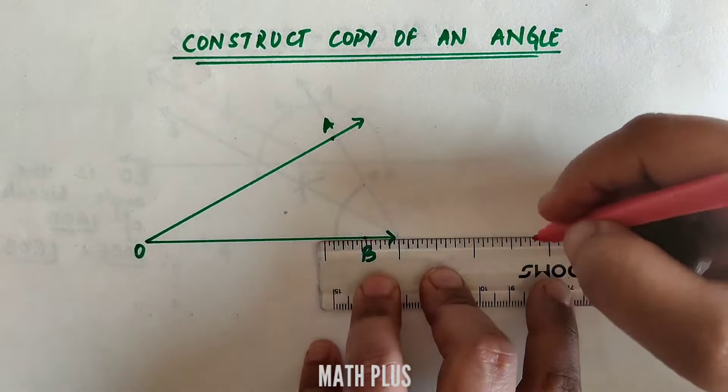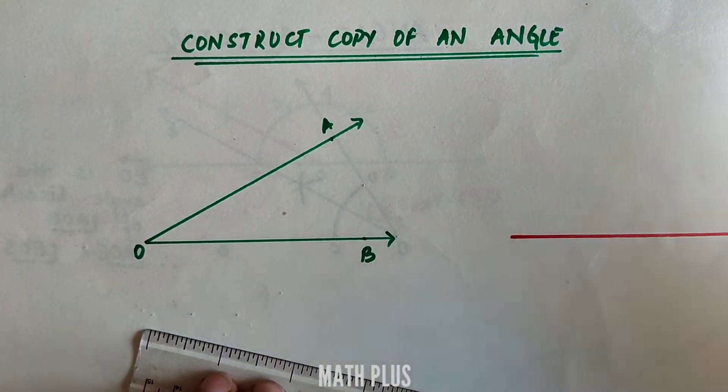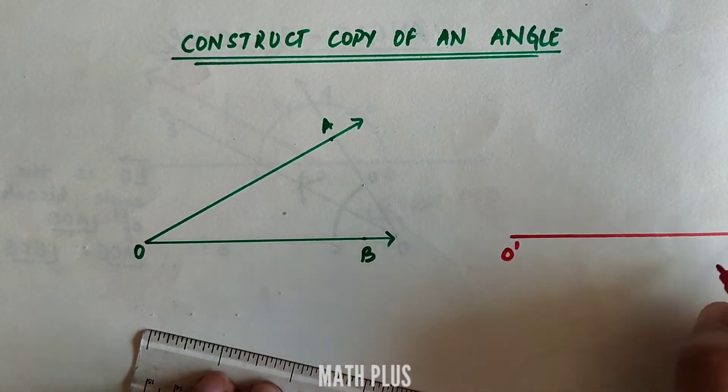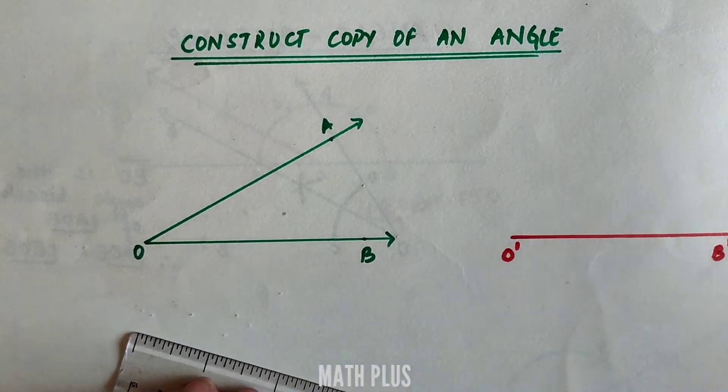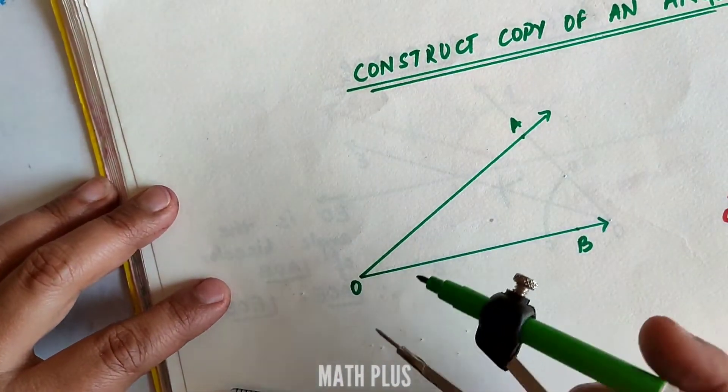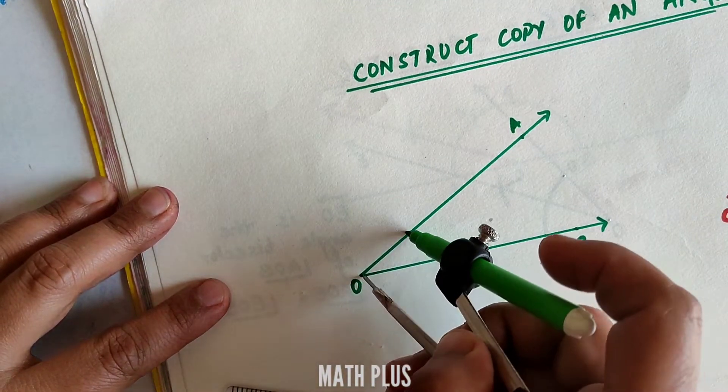So here we are going to draw a ray. The name of the ray is O'B' because it is going to be same as AOB, so we will name it with the same alphabets with a dash on their heads.